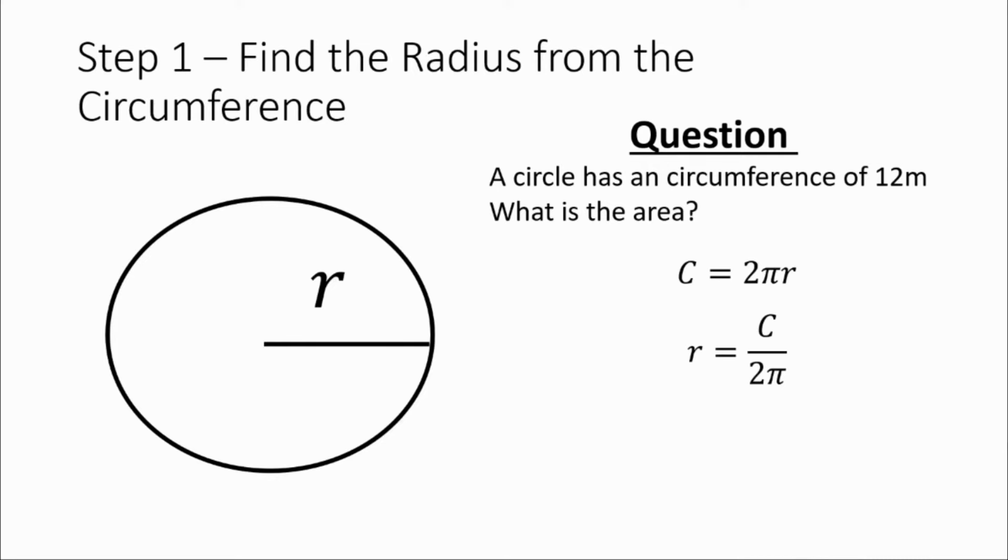We know that the circumference is 12, so we just need to substitute 12 where we have c in that equation. So we do the substitution. So the radius is 12 divided by 2π. And if we just work to two decimal places consistently, just to keep things simple, we will get a radius of 1.91 meters.